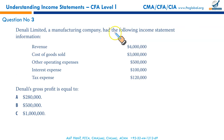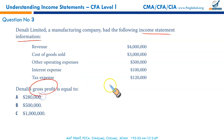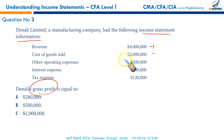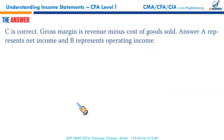Denali Limited Manufacturing Company has had the following income statement information. We have been given revenue, CGS, other operating expenses, interest expense, and tax expense. What is needed? Gross profit. Revenue less cost of sales. Gross profit is the difference between revenue and cost of sales — straightforward, 1 million. C.